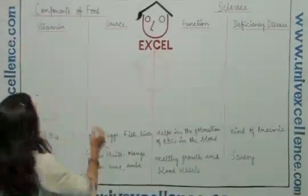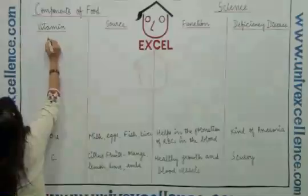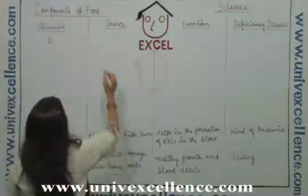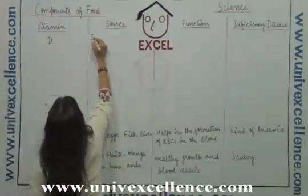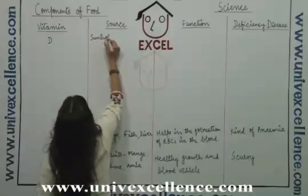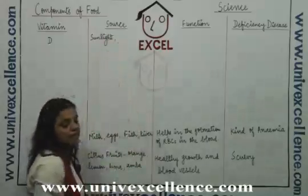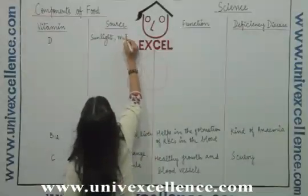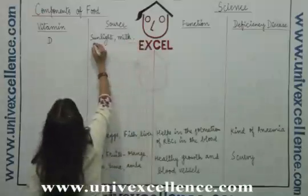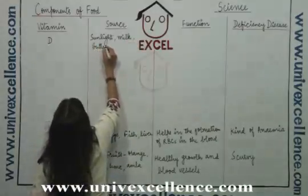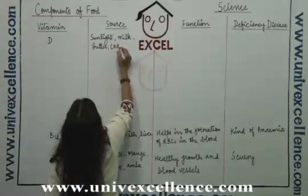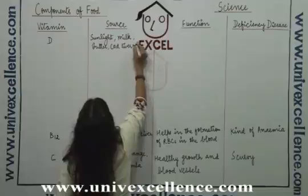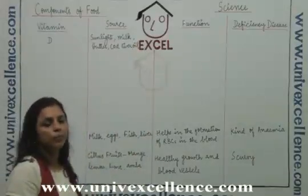The next vitamin is vitamin D. The main source of vitamin D is sunlight. Besides sunlight, the other sources are milk, butter, and cod liver oil. So these are the sources of vitamin D.